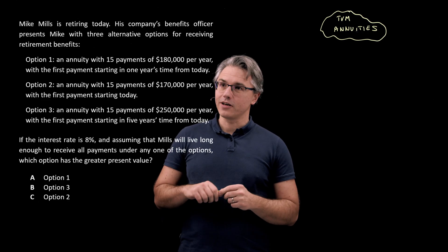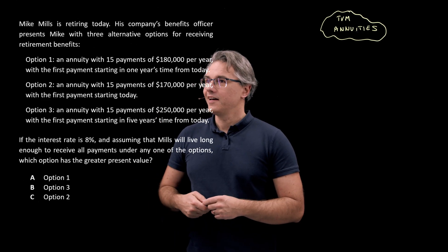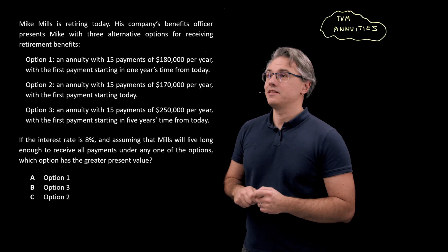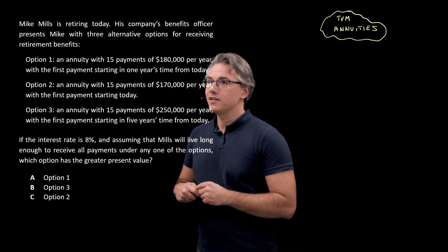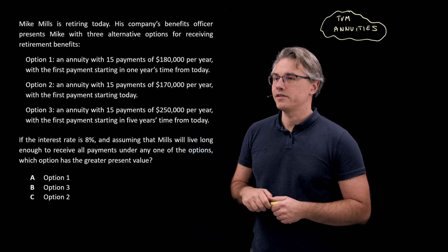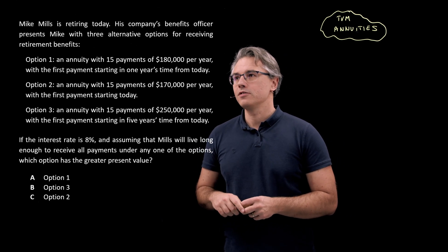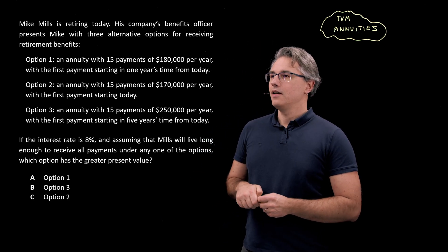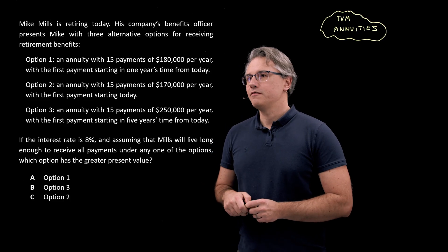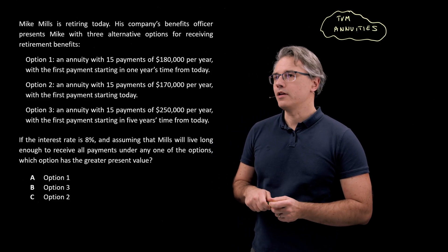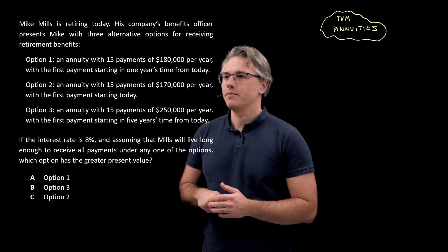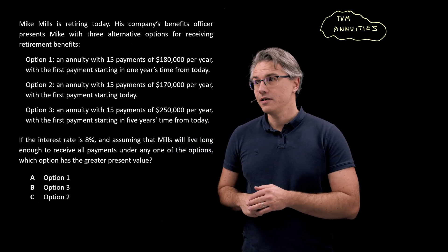This is the question which I want us to have a go at. It's rather long and there are some options in it. So Mike Mills is retiring today, his company's benefits officer presents Mike with three alternative options for receiving retirement benefits. Option one: an annuity with 15 payments of $180,000 per year with the first payment starting in one year's time from today.